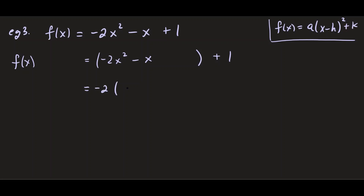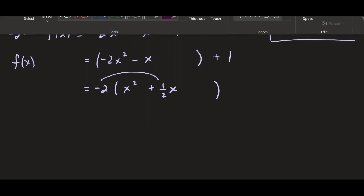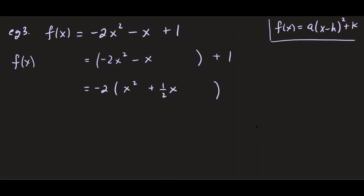After factoring out -2, the x² term is fine. For the x term, we need -2 × (1/2) = -1, which matches the original coefficient, so we get -2(x² + (1/2)x). Now we complete the square: take half of 1/2, which is 1/4, then square it to get 1/16. We add 1/16 inside the parentheses.